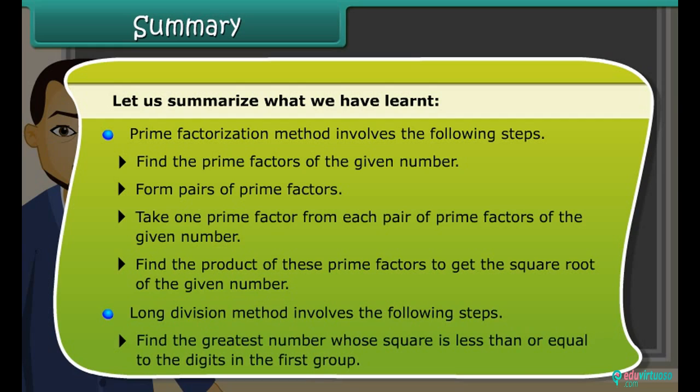Long division method involves the following steps: Find the greatest number whose square is less than or equal to the digits in the first group.